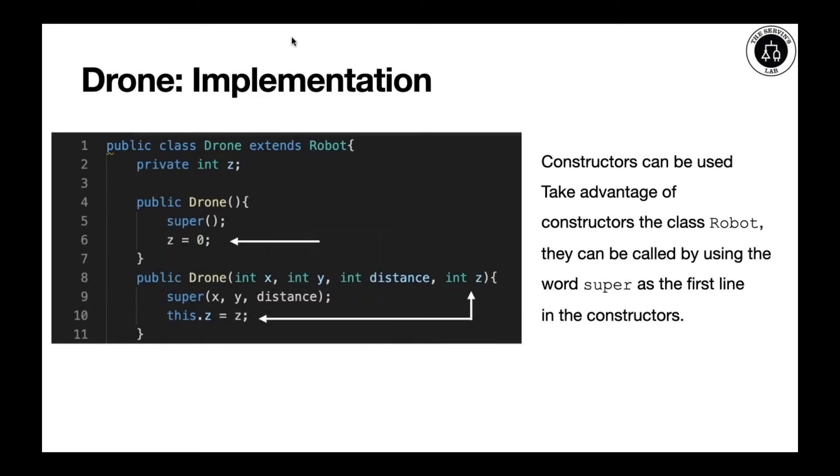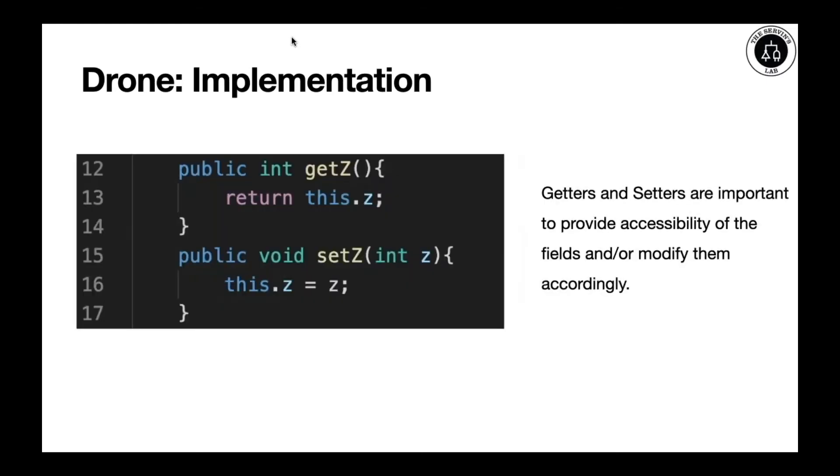After you execute that, you must initialize the remaining fields. In this case, we'll initialize Z to 0 because it's an int, as you can see in line 2. Also, we're going to initialize line 10 with the parameter value by using the proper this.z gets the parameter Z.